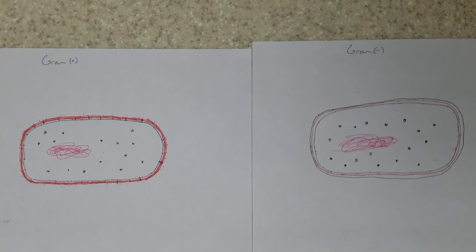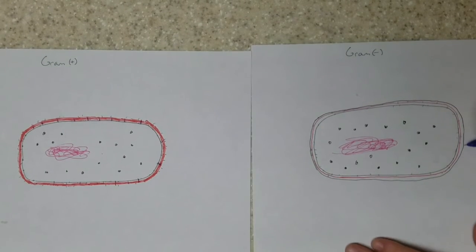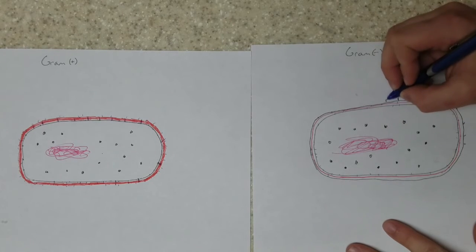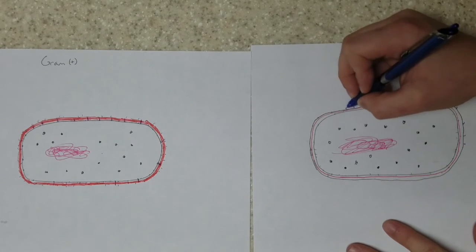And then I switch back, I believe, to the gram-negative cell. And I'm drawing here LPS, or lipopolysaccharides, that are only found on the outside of gram-negative bacteria.